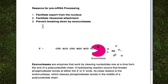The second reason is it's going to facilitate ribosomal attachment, which means that the ribosome will be able to identify the mRNA strand and attach onto it much easier with the 5' cap than had it not been there.